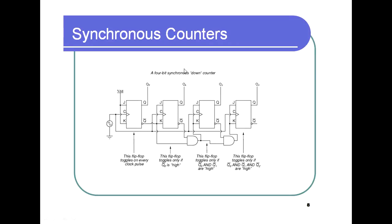For a 4-bit synchronous down counter, the first flip-flop again toggles on every clock pulse. The second flip-flop toggles only if Q0 complement is high. The third toggles only if Q0 complement and Q1 complement are both high. The fourth toggles only when Q0, Q1, and Q2 complements all go high.